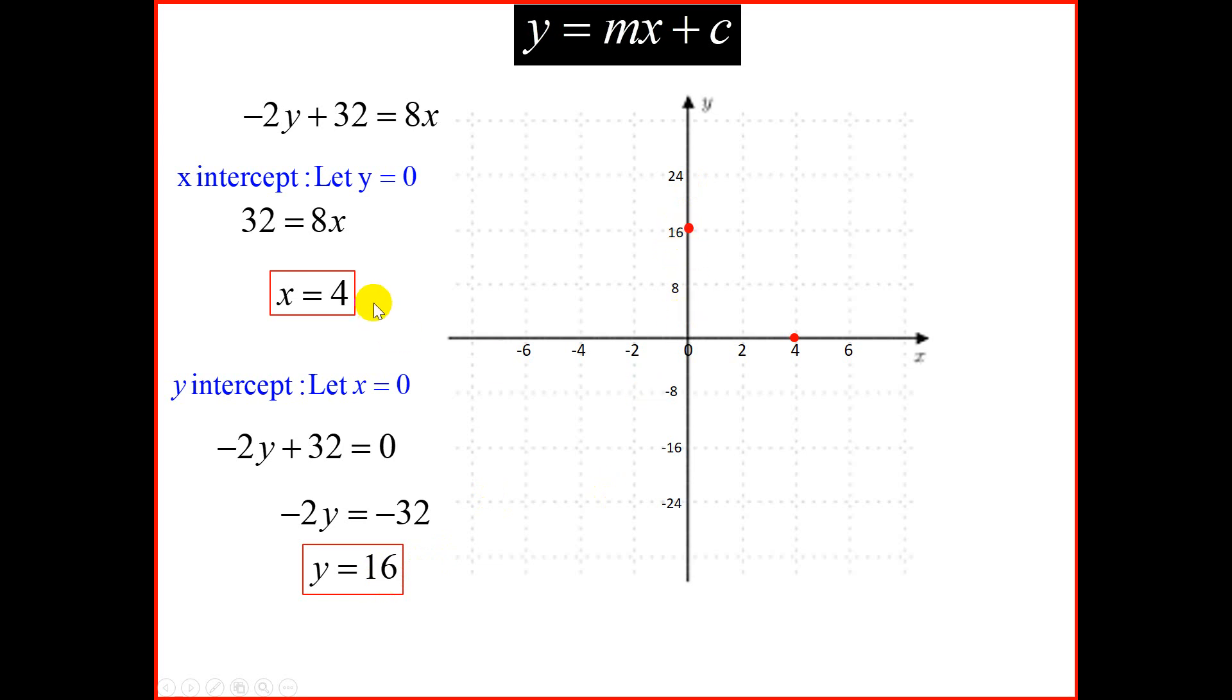So please note, before you go and scale your x and y-axis, first find your intercepts, and that will give you an idea of how big your values are going to be. And you can use different scale on the x-axis and a different scale on the y-axis. Joining these two points, we will have our straight line graph.